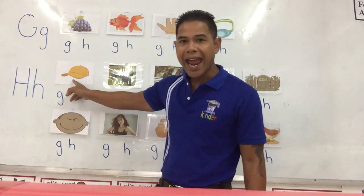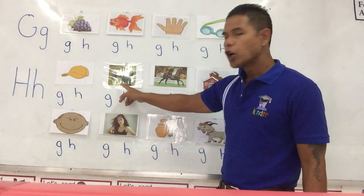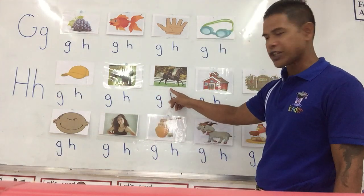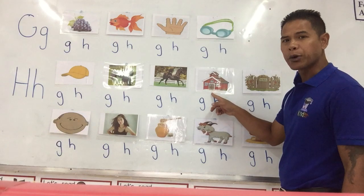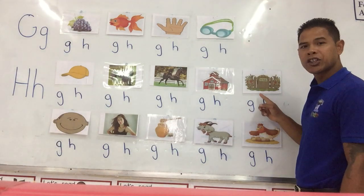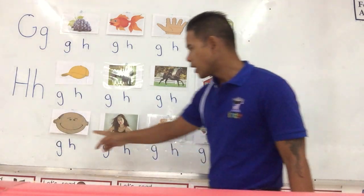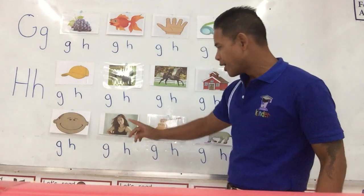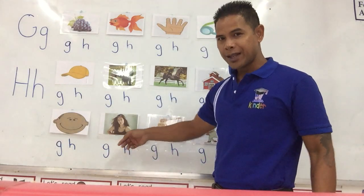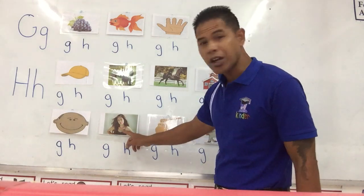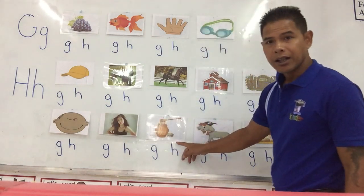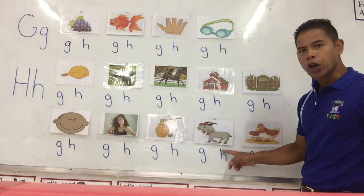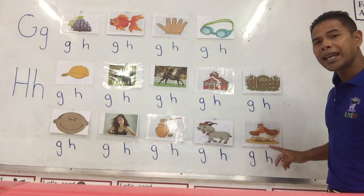Hat. Gorilla. Horse. House. Gate. Head — this is our head. Girl. Honey. Goat.